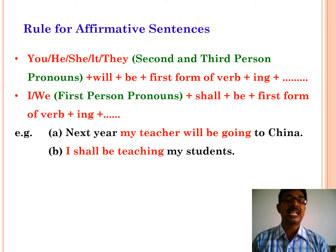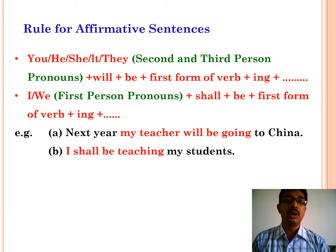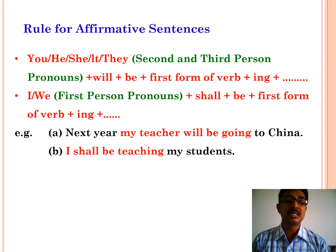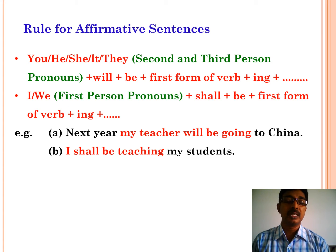Now let us see the structure to frame the future continuous tense. For second and third person pronouns such as you, he, she, it, or they: pronoun — plus will — plus be — plus first form of the verb plus -ing — plus object. For first person: I or we — plus shall — plus be — plus first form plus -ing — plus object. For example: next year my teacher will be going to China. I shall be teaching my students.